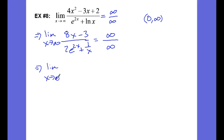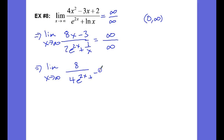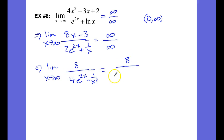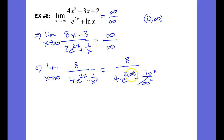Taking the limit as x approaches infinity again: the derivative of the numerator is 8. On the bottom, the derivative of 2e to the 2x is 4e to the 2x, and the derivative of 1 over x — which is x to the negative 1 — gives negative 1 over x squared. Plugging in infinity: 4e to the 2 times infinity goes to infinity, and negative 1 over x squared goes to 0. So we have 8 over infinity, and that goes to 0.